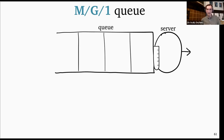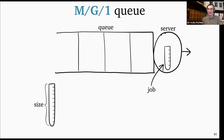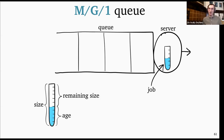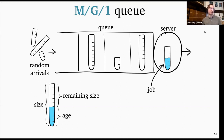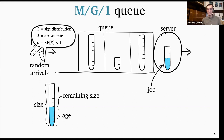I'm going to draw jobs as test tubes, where the height of a test tube represents the job size — the amount of time it needs for service. We represent service as filling the job with water. We call the amount of service a job has received so far its age — this refers to service age rather than system age, so the service age only goes up while the job is in service. The rest of the job, its size minus age, is its remaining size — the amount of work left.